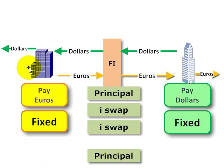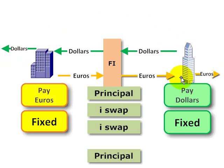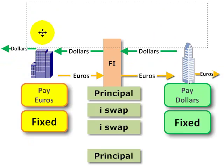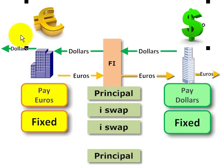To illustrate, consider that we have two firms. The first company has issued a bond denominated in U.S. dollars, and across the ocean, another company has issued a bond denominated in euros. For various reasons, they enter into a currency swap — in particular, the easiest variation: a fixed-for-fixed currency swap.